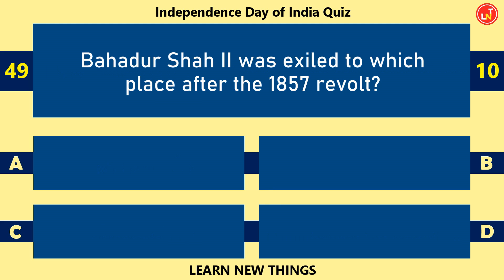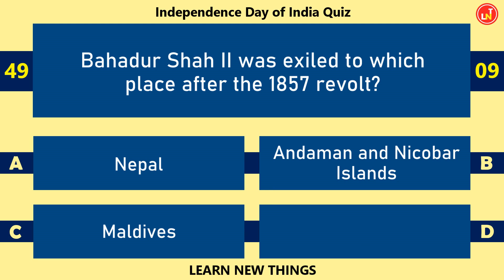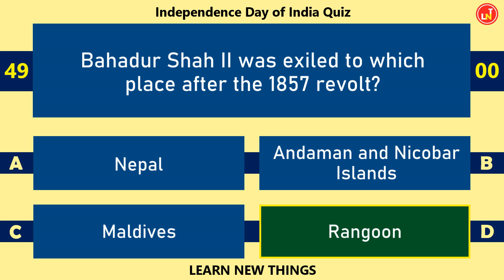Bahadur Shah II was exiled to which place after the 1857 revolt? Rangoon.